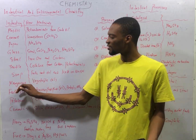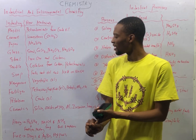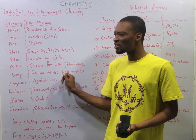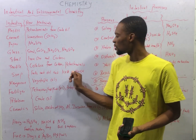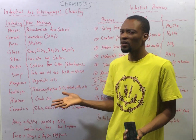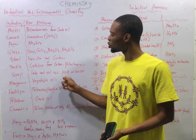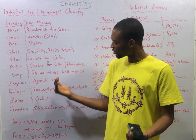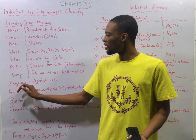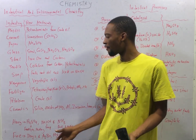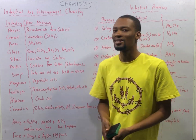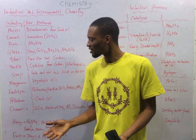In the soap industry, you use fats and oils and KOH or NaOH. Potassium hydroxide is used for making liquid soap; sodium hydroxide is used for making solid soap. For liquid soap generally, you apply potassium hydroxide; for solid soaps, you apply sodium hydroxide. For the margarine industry, we use vegetable oils as raw materials.